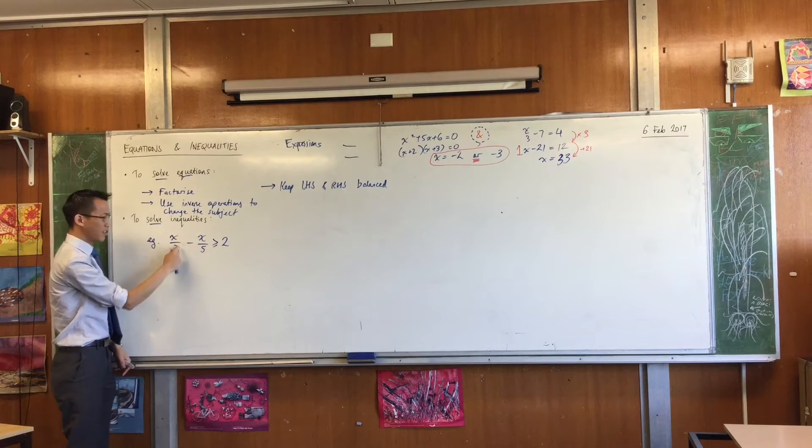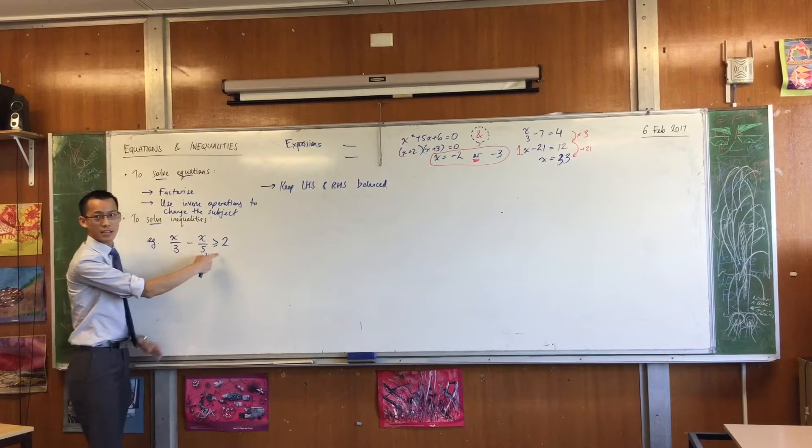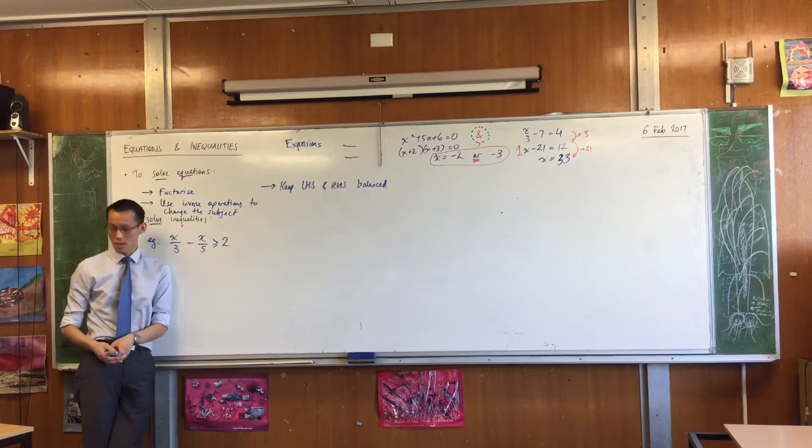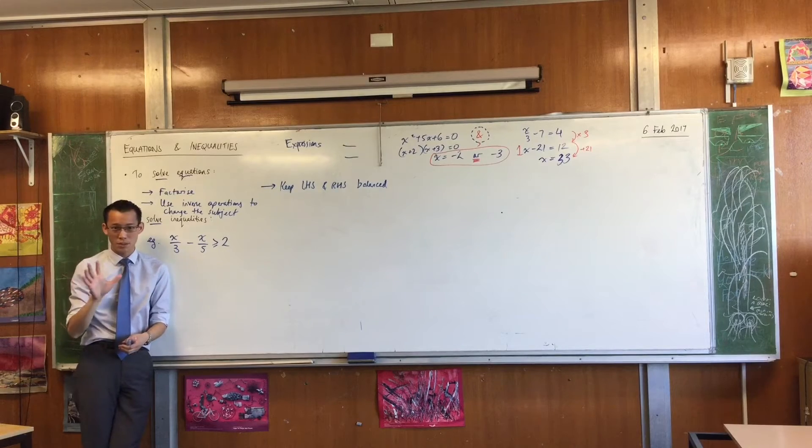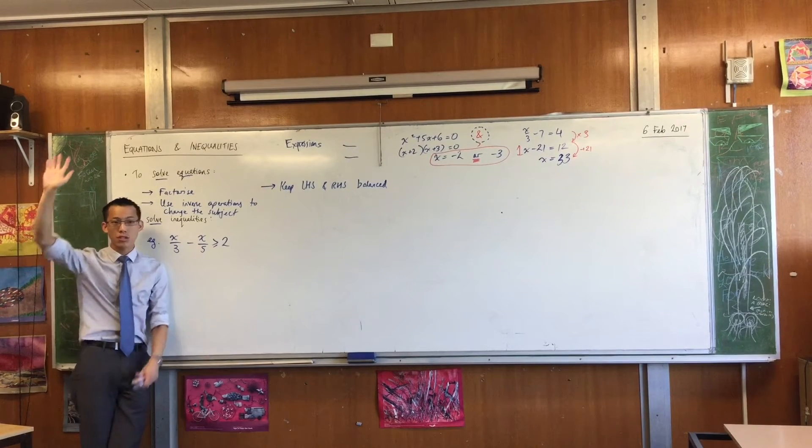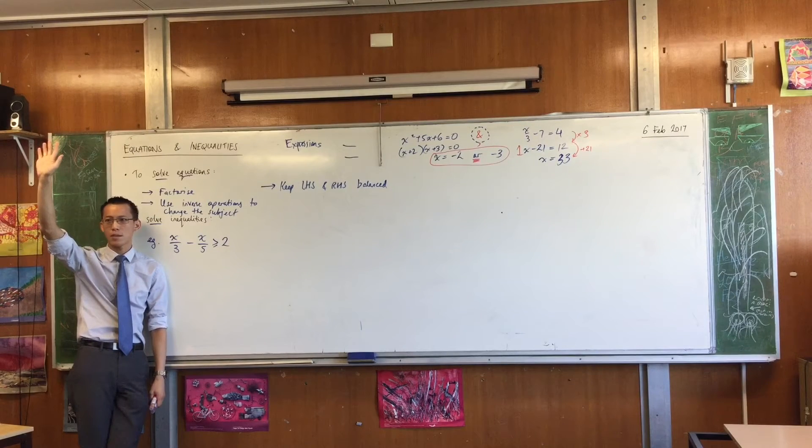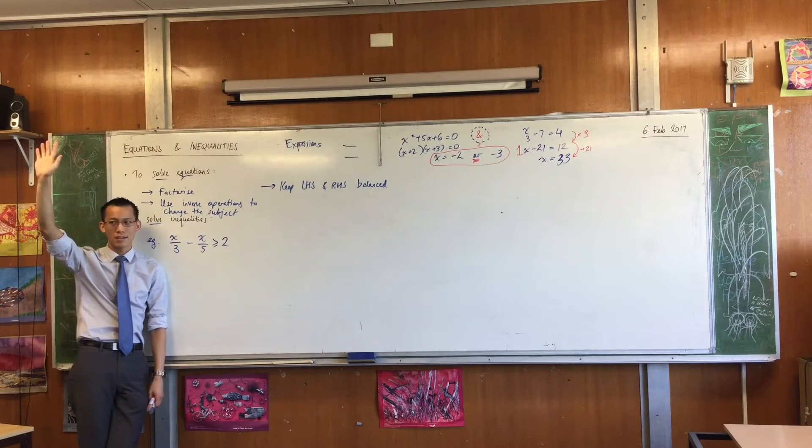So we read this as X on 3 take away X on 5 is greater than or equal to 2. Now don't just do it for me just yet. Just raise your hand if you think you could solve this. Yeah, take some time to think about it.